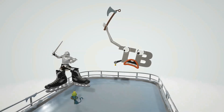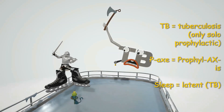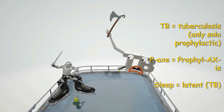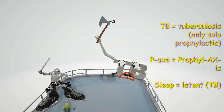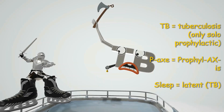The enemy in this scene is the TB guy, to remind us of tuberculosis. Specifically, isoniazid is the only agent used as solo prophylaxis against TB — that's why the TB guy has an axe with a 'P' on it, P for prophylaxis. Isoniazid is also used as monotherapy for latent TB, when TB is sleeping and not active.